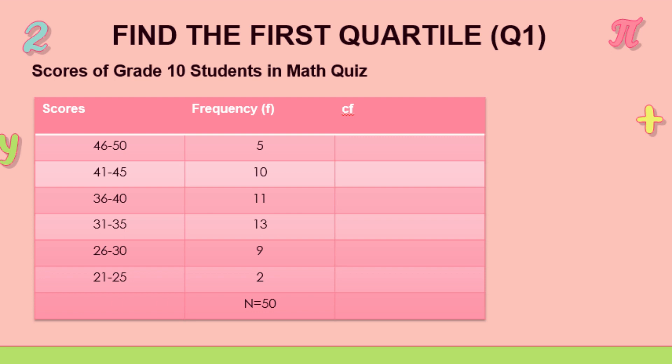So 2 students scored in the range from 21 to 25. We have 26 to 30, 9 students. 31 to 35, 13 students. 36 to 40, 11 students. 41 to 45, 10 students. And 46 to 50, we have 5 students.